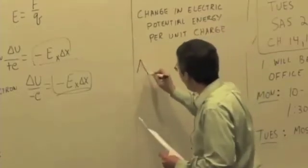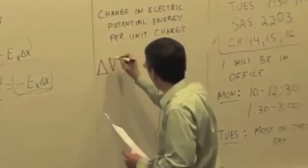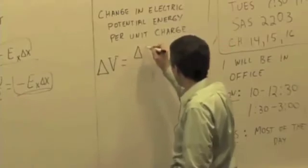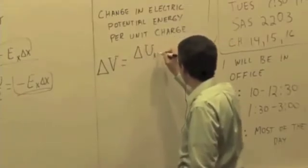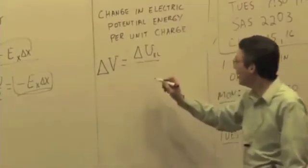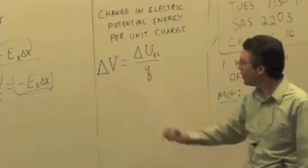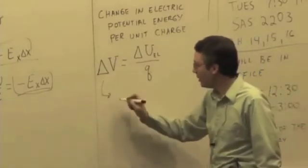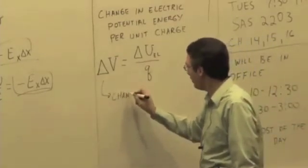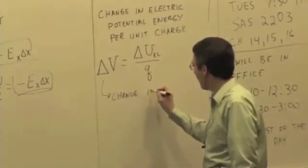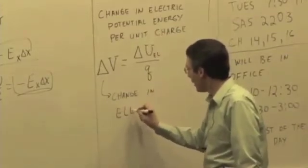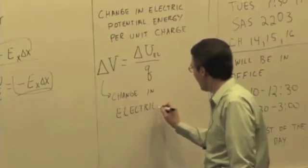We'll give it the symbol V, so it's a change in capital V and that's equal to a change in capital U, electric potential energy, U electric, divided by the charge. And this thing is called the change in just electric potential.